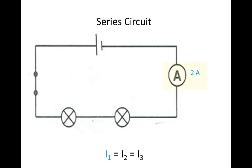So if the ammeter reads 2 amps at this point, it would read 2 amps at every point in this series circuit. So if we put the ammeter here in between the two bulbs, it will still read 2 amps. That is what we're focused on.